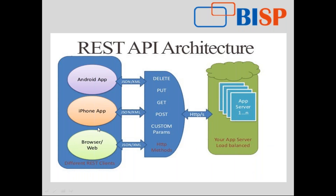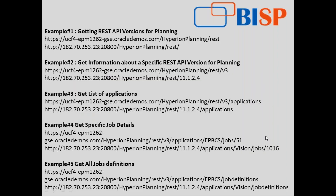As shown in this architecture snapshot, the REST client could be your browser, an Android app, or an iPhone app. You can use any one of the HTTP methods, and the message will be transferred through JSON or XML — DELETE, PUT, GET, POST. In today's examples, I will only be using the GET option. The request will travel through HTTPS, and in our case we have a cloud application VBCS or it could be on-prem.